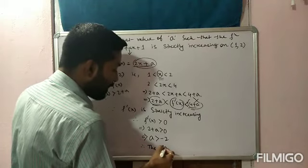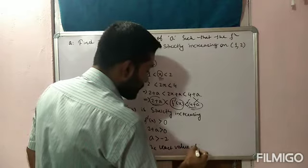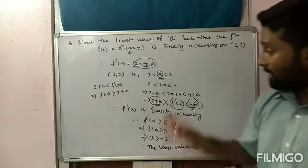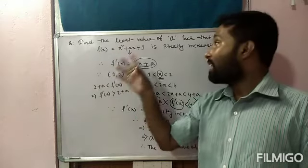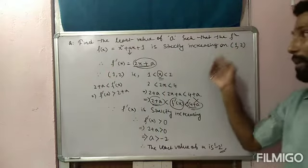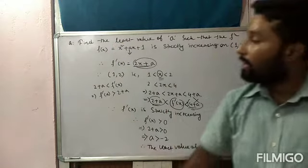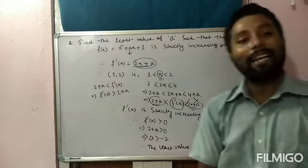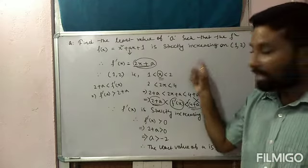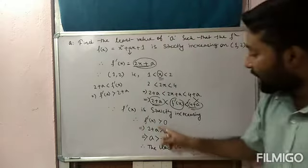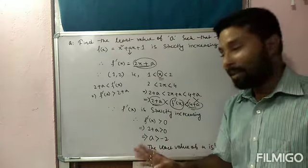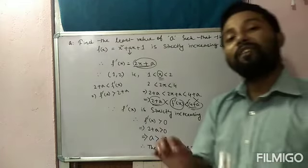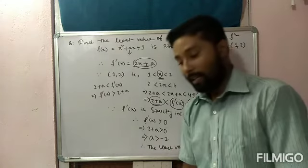So the minimum value of a is -2. To summarize: to find the minimum value of 'a', find f'(x), determine its range over the given interval, and since the function is strictly increasing (f'(x) > 0), use the lower bound of f'(x) to find the condition on 'a'. Thank you for today.